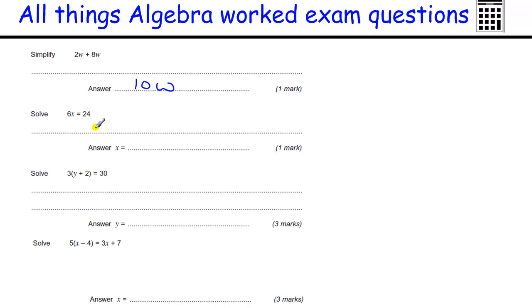Solve 6X equals 24. What times 6? 6 times something is 24. Well, that something is 4.